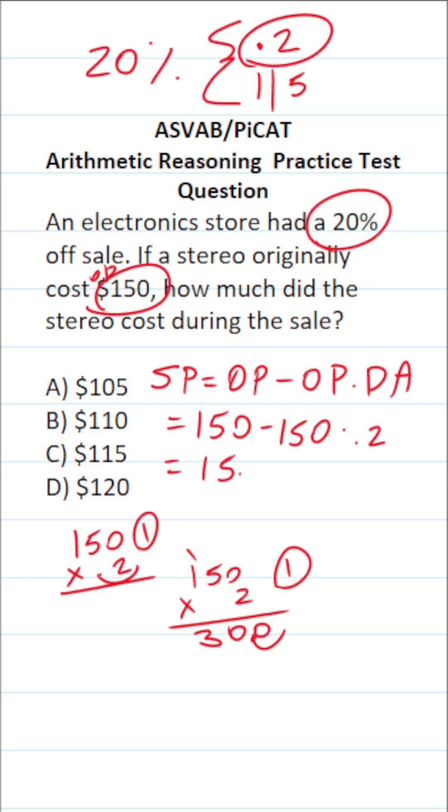This becomes $150 minus $30, which is going to be $120. So how much did the stereo cost during the sale? D, $120.